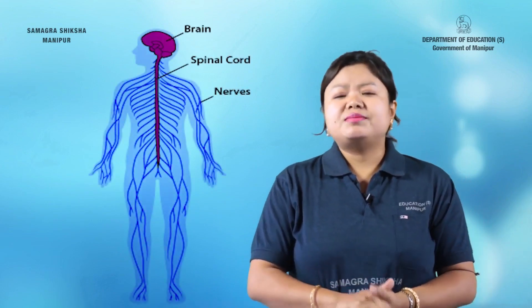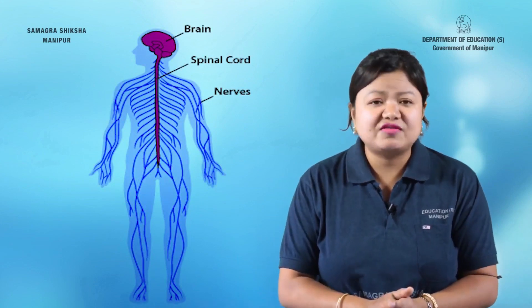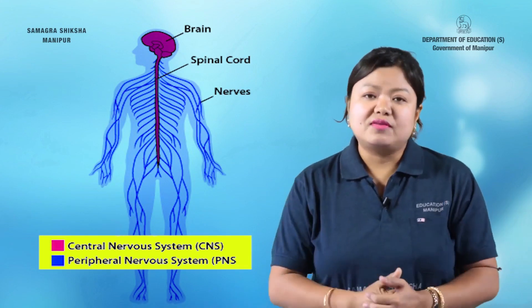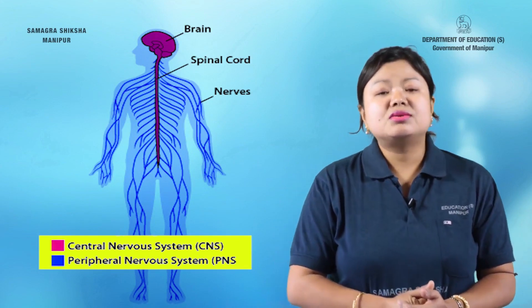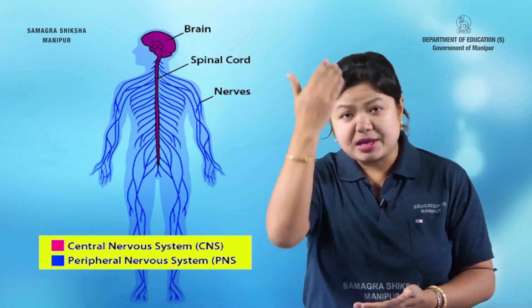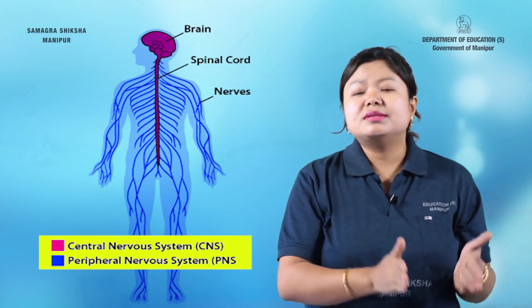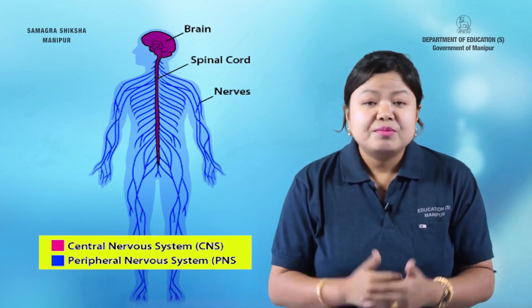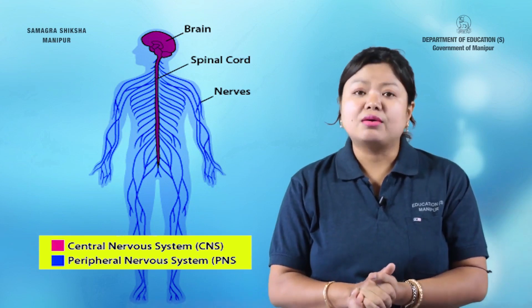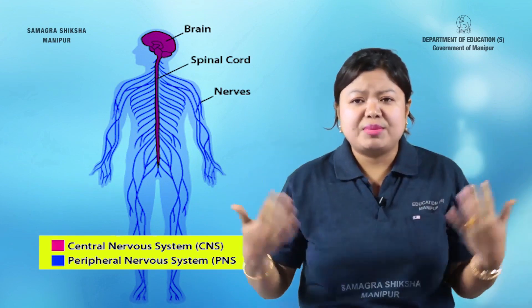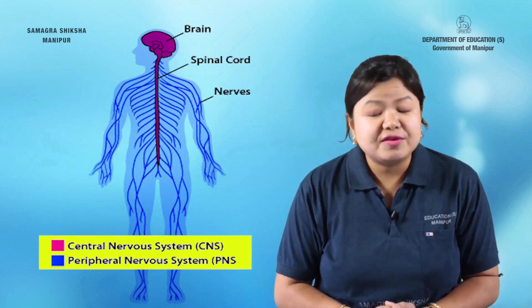We can classify the human nervous system into two types: the central nervous system and the peripheral nervous system. The central nervous system consists of the brain and spinal cord. The peripheral nervous system extends from the central nervous system throughout the body.